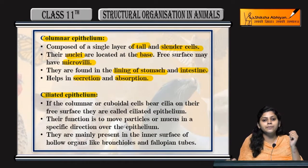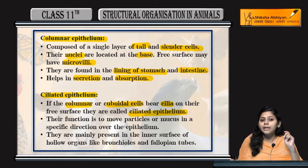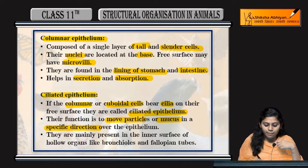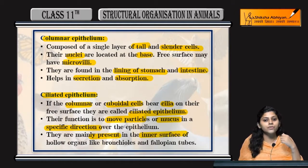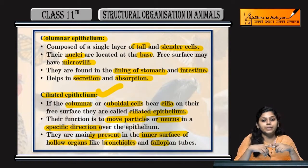Coming to ciliated epithelium. Columnar or cuboidal cells — both can bear cilia on their free surface; they are called ciliated epithelial cells. They move particles or mucus in a specific direction. They are present on the inner surface of hollow organs like bronchioles and fallopian tubes.